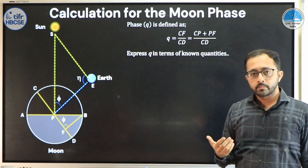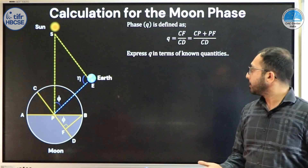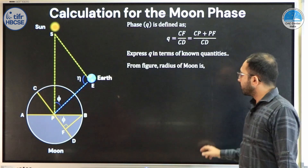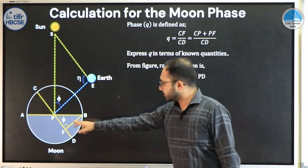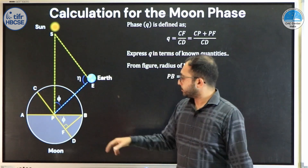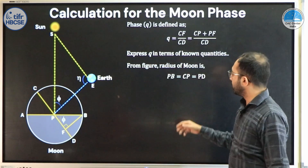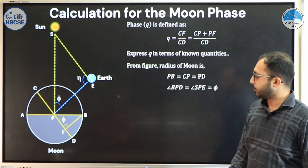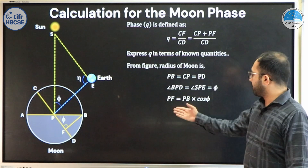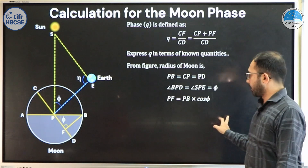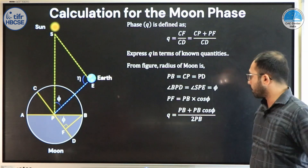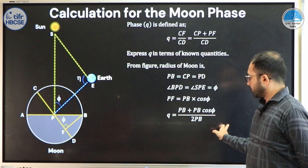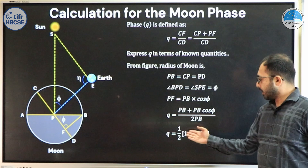We want to express the phase in terms of known quantities such as the elongation or the radius. From the figure, the radius of the moon is PB, which equals CP or CD. The angle BPD is phi, and PF equals PB·cos(phi) by simple trigonometry. Substituting these values, Q equals (PB + PB·cos(phi)) divided by 2·PB, where PB is the radius of the moon. Simplifying, the phase is Q = ½·(1 + cos(phi)).